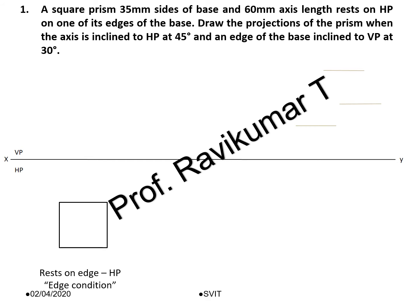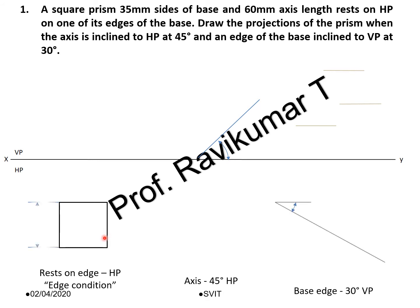The second important thing is axis at 45 degrees to HP. The third important condition is the base edge — this base edge is inclined 30 degrees to VP.